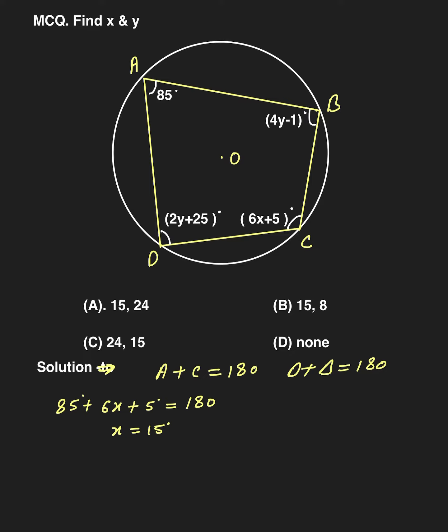From D plus B: D is 2y plus 25, B is 4y minus 1. This equals 180.